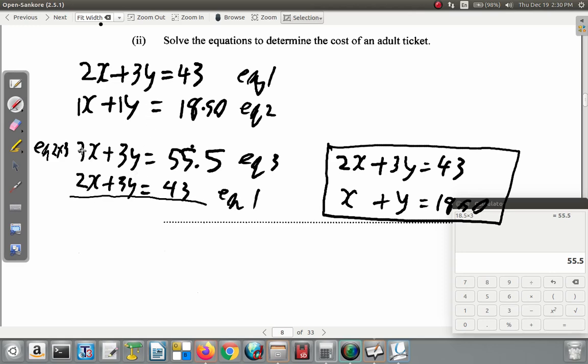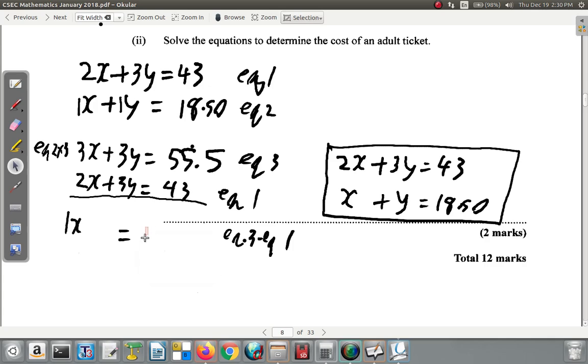Now let's subtract them because 3Y minus 3Y will be no Y. You will have no Ys left. This is equation 1, same as above. I want to have equation 3 minus equation 1. So you subtract corresponding items. 3X minus 2X gives you 1X. 3Y minus 3Y gives you no Ys. You don't even have to write it. X equals, and you have 55.5 minus 43, gives you 12.5.